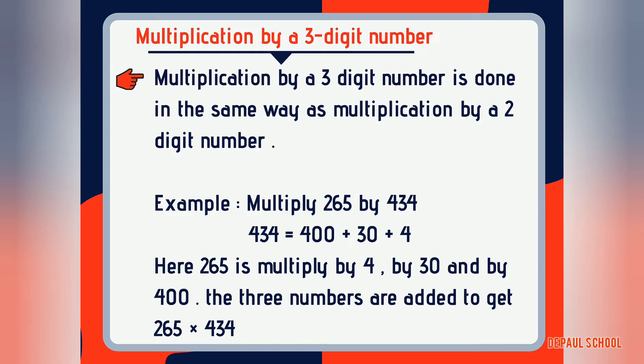In the previous part of the video, I taught you multiplication by a two-digit number. Now our next topic is multiplication by a three-digit number. It is done in the same way as two-digit multiplication. Let me give you an example: 265 multiplied by 434. The multiplicand is 265 and the multiplier is 434. We write the multiplier in expanded form: 400 plus 30 plus 4.